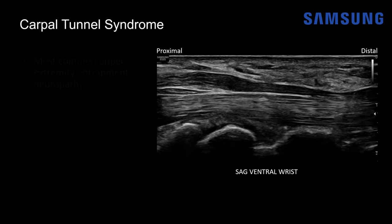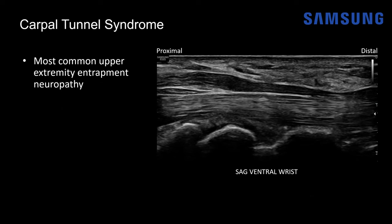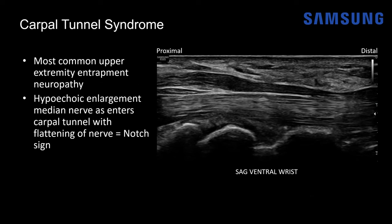Carpal tunnel syndrome is the most common upper extremity entrapment neuropathy. As the median nerve approaches the carpal tunnel, it will become hypoechoic and enlarged, and then flattened at the level of the tunnel, yielding the notch sign. Here in a sagittal view — proximal on the left, distal on the right — the carpal bones are below and the flexor tendons are visible. The thickened hypoechoic median nerve becomes a flattened diameter at the carpal tunnel — that's the notch sign, typical for carpal tunnel syndrome.